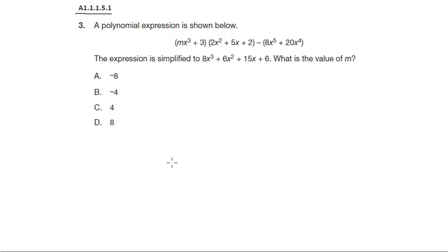A polynomial expression is shown below. mx to the third plus 3 times the quantity 2x squared plus 5x plus 2 is equal to 8x to the fifth plus 20x to the fourth. The expression is simplified to 8x cubed plus 6x squared plus 15x plus 6. What is the value of m?